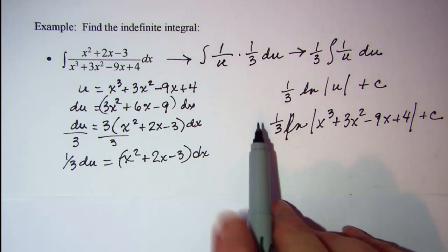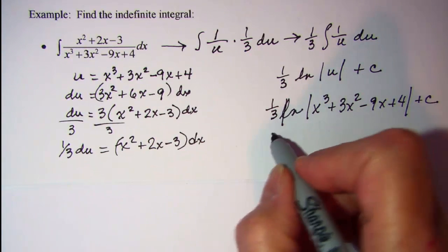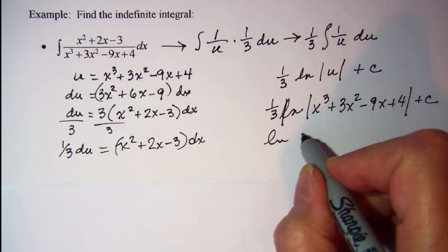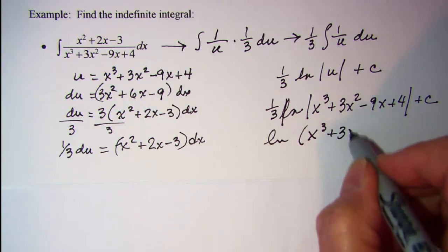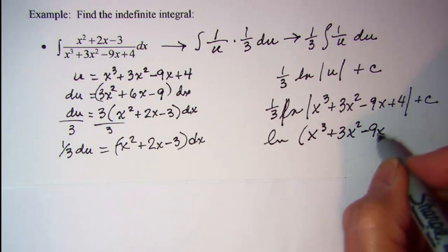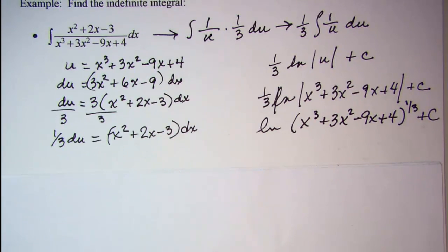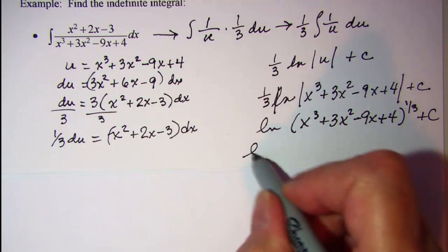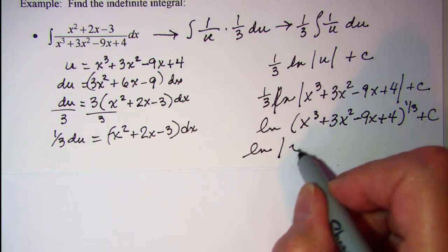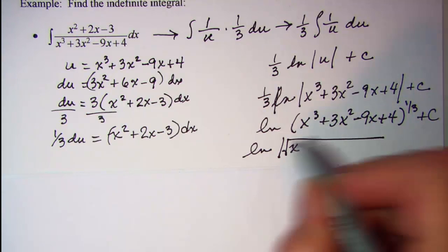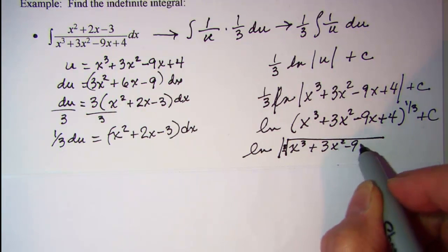I can bring this 1/3 up as an exponent, so I have ln of x cubed plus 3x squared minus 9x plus 4 to the 1/3, which we know is a cube root, so ln absolute value of the cube root of x cubed plus 3x squared minus 9x plus 4.